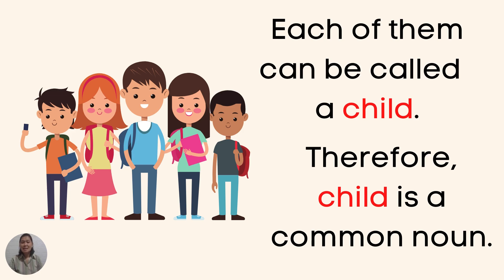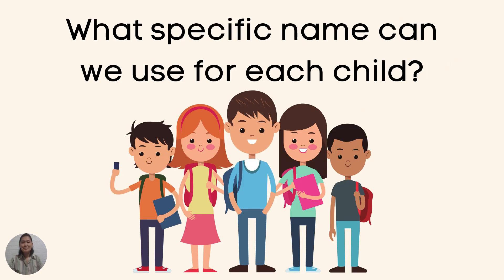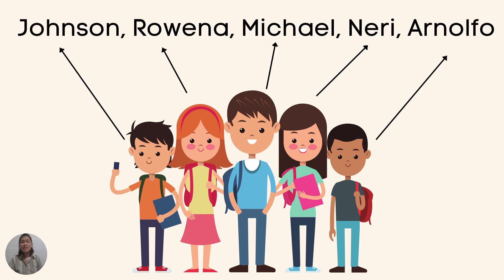Now, let's name them. What specific name can we use for each child? Let's start from the left. We have Johnson, Rowena, Michael, Neri, Arnolfo.